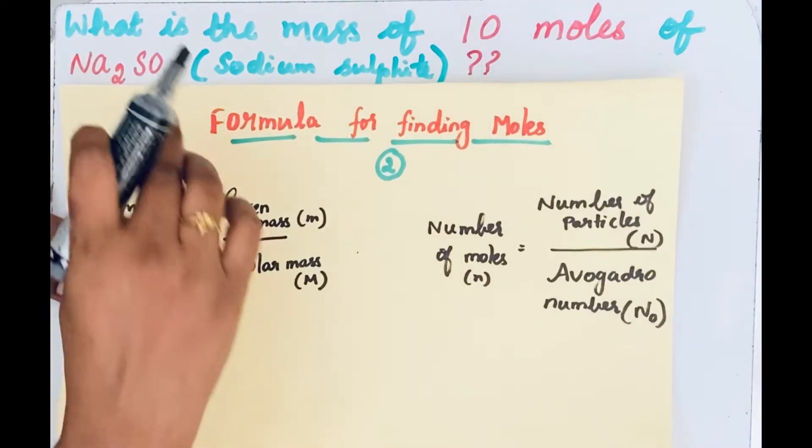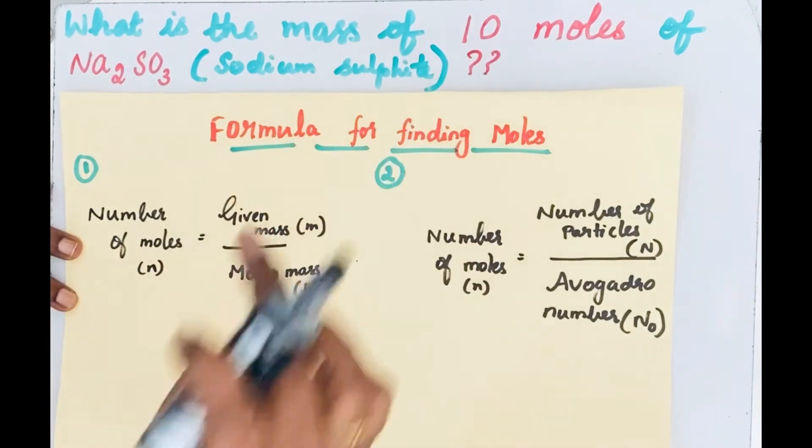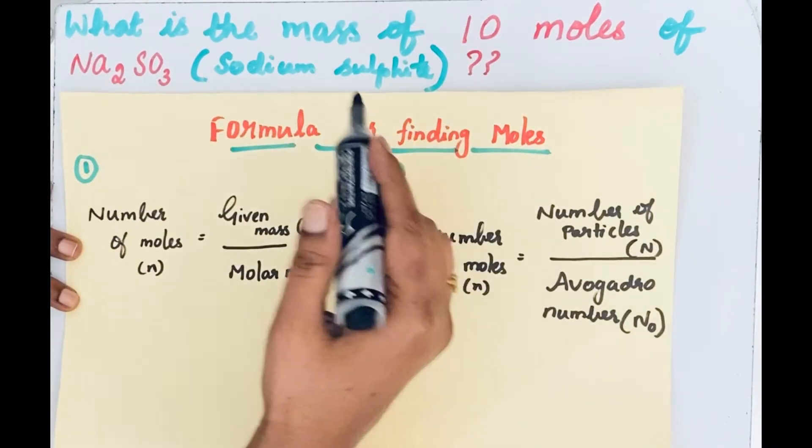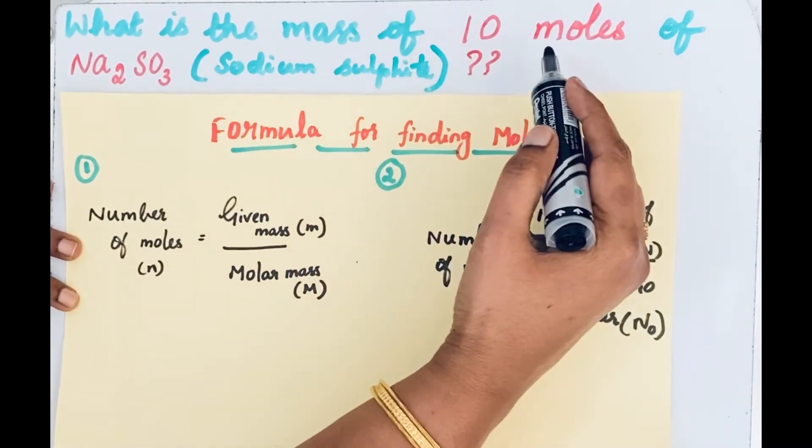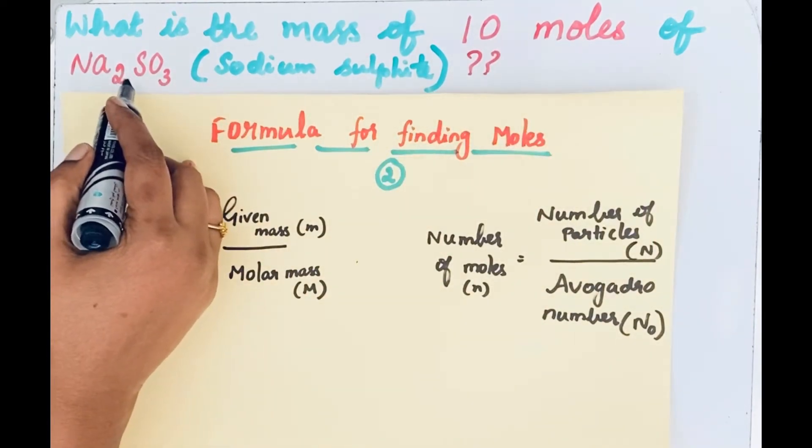Let us look at our question. What is the mass of 10 moles of Na2SO3, sodium sulfite? See here, they ask the mass. Number of moles, 10 moles is given. Then the molecule is also given.